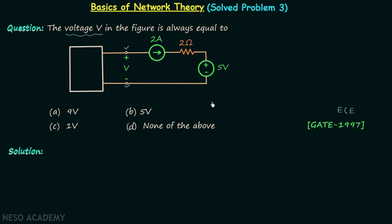We are required to find out the voltage V. It is the potential difference across this point and this point, and to find out voltage V we will apply KVL in this loop.